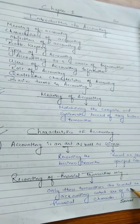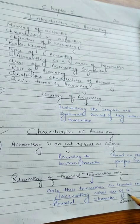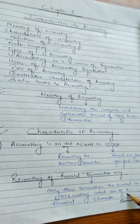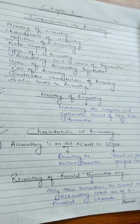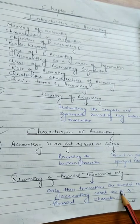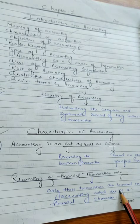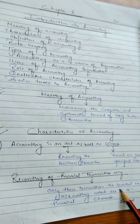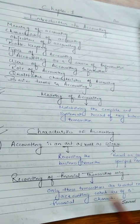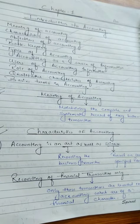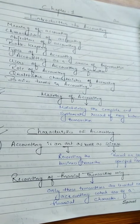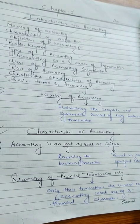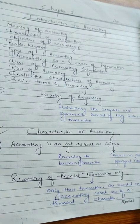Bahut saari aisi transactions hoti hain jo business ke liye important hoti hain, but because they cannot be expressed in terms of money, they will not be recorded in books of account. For example, a quarrel between the production manager and sales manager, resignation by an able experienced manager, or a strike by employees — all these events affect the earning of the business, but as they cannot be expressed in terms of money, they will not be recorded in the books of account.